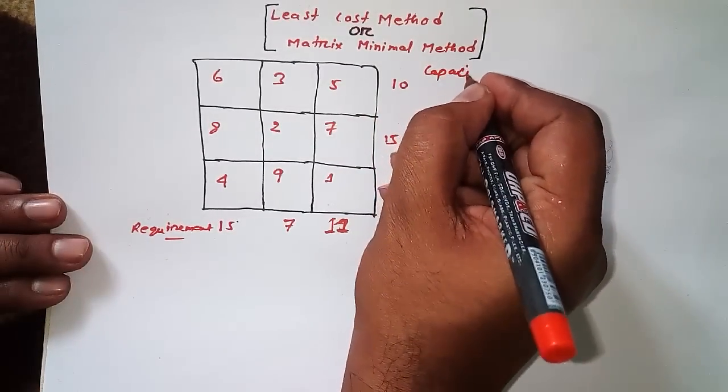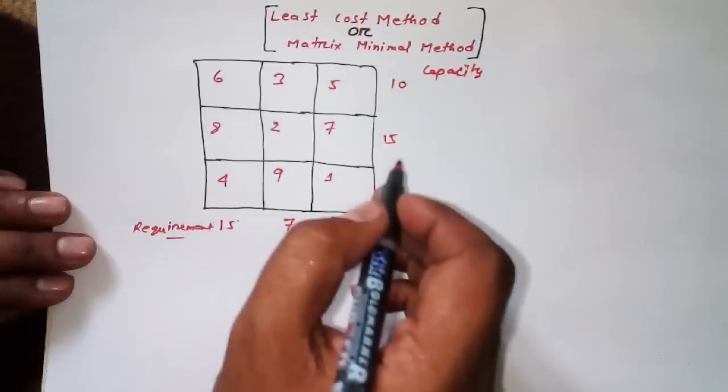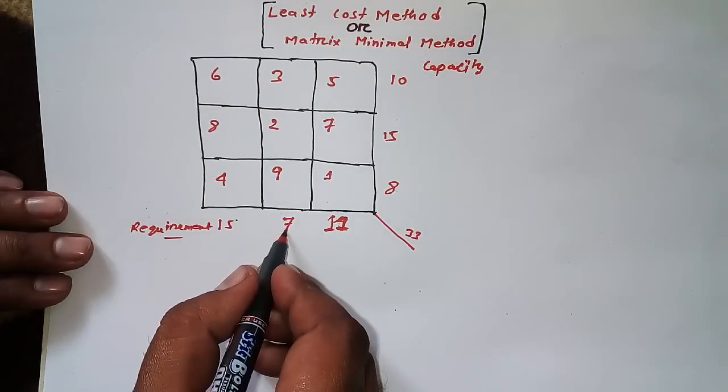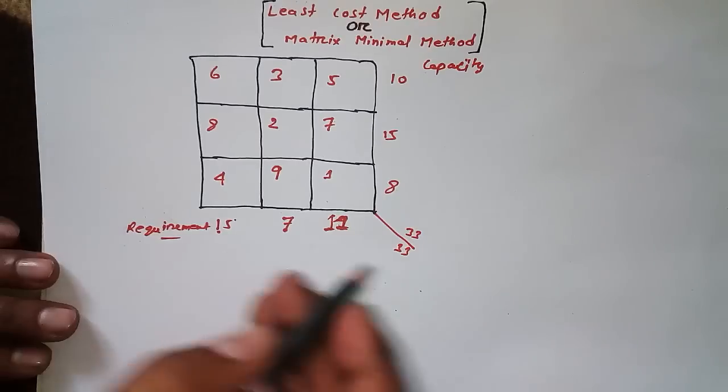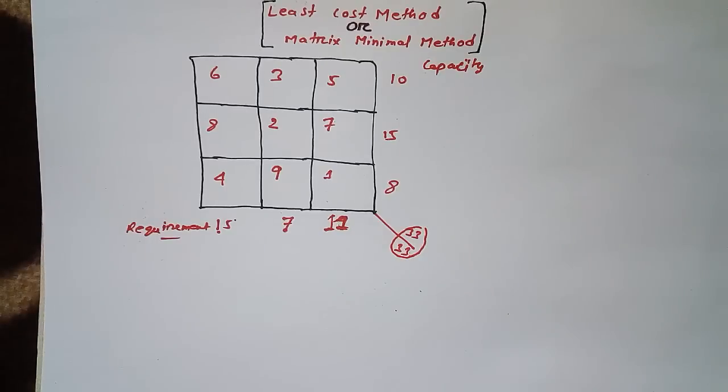If I do the addition: 25 and 8 is 33. For the other side: 18, 10, and then 33. That means both requirement and capacity are the same, so I can solve the question properly.